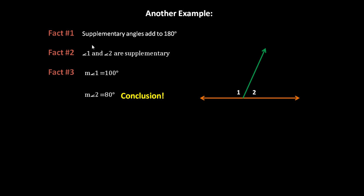And then so our conclusion is that the measure of angle two is 80 degrees. Because we know fact one, that supplementary angles add up to 180, and so if one and two are supplementary, and one is 100, that means that, I'll just show you what I did there. That just means if we do 180 minus 100, that's how I got the 80. That's 80 degrees. So that's where that came from.